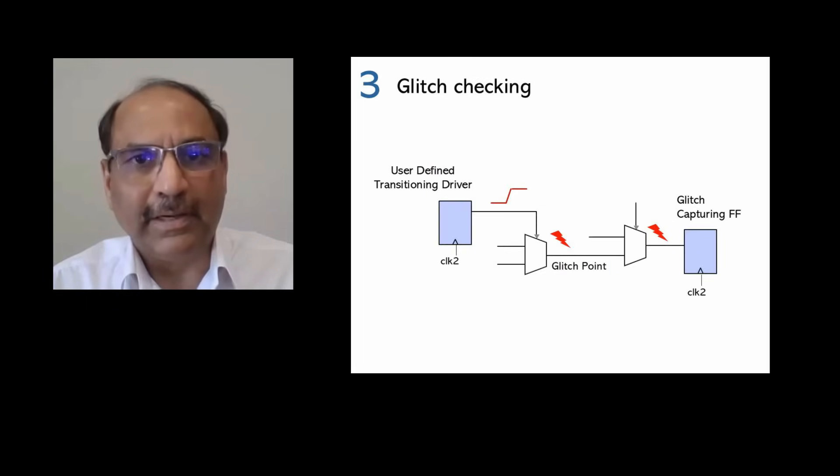Third, connectivity checking should also include glitch checking to avoid functional failures due to glitches on untimed paths.